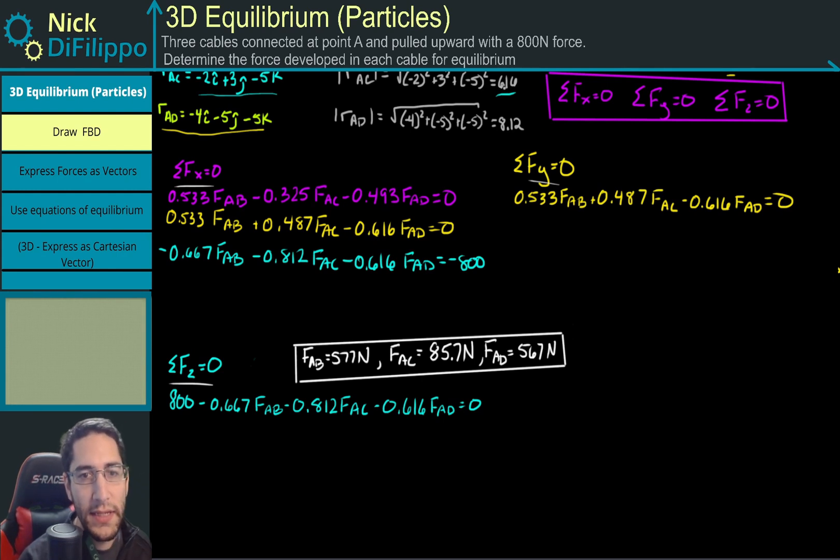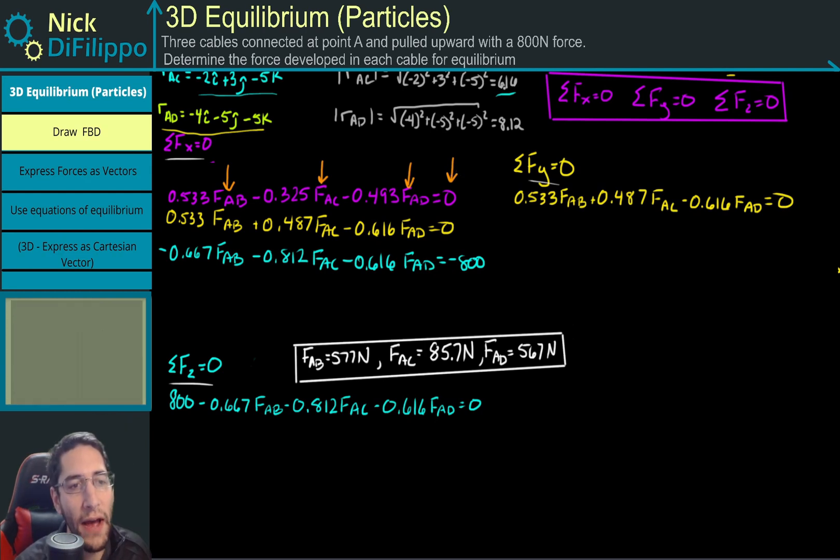If you look at this, everything that is a FAB is in this column, everything that's a FAC is in this column, everything that's an FAD is in this column, and everything in this column is just a constant with no variable. After I have all of these lined up, I can make a matrix.